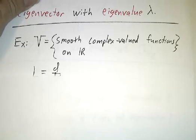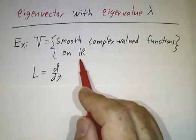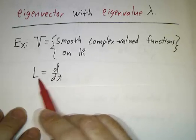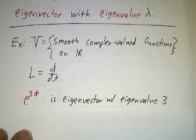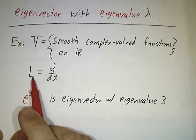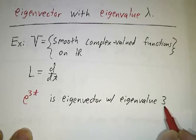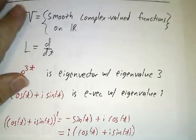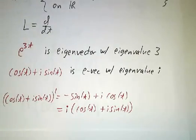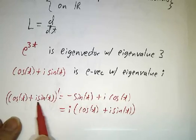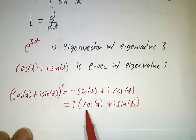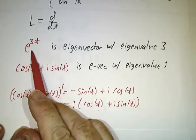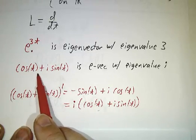For example, suppose we have the space of smooth complex-valued functions of a real variable, and L is the derivative operator. The function e^(3t) has derivative 3e^(3t), so it is an eigenvector of the derivative operator with eigenvalue 3. And the function cos(t) + i·sin(t) is an eigenvector with eigenvalue i — because its derivative is -sin(t) + i·cos(t), which equals i times cos(t) + i·sin(t).